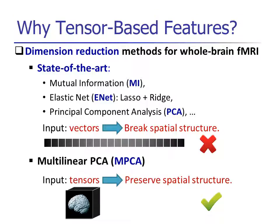This motivates us to use a popular tensor-based feature extraction method, the multilinear PCA or MPCA. It takes tensors directly as input so that the spatial structure in the whole brain fMRI is well preserved.